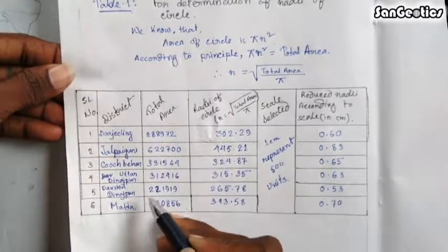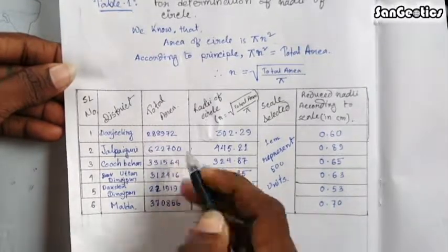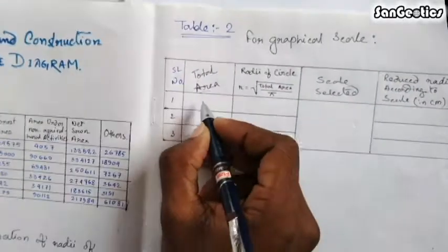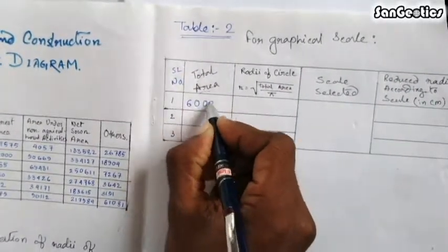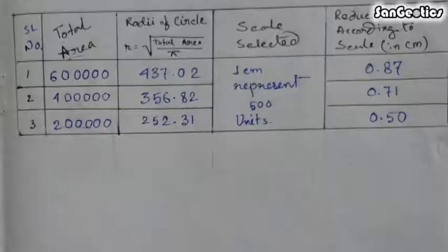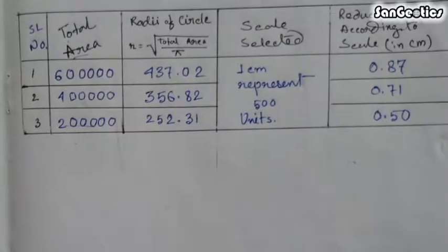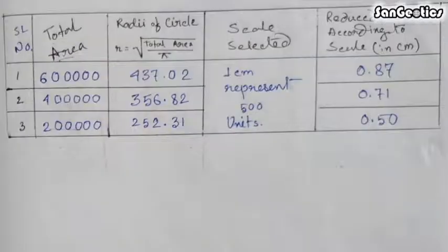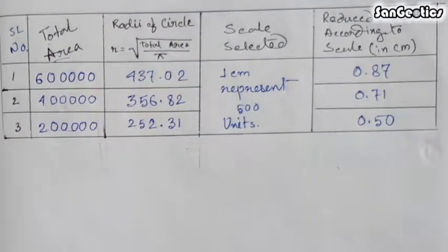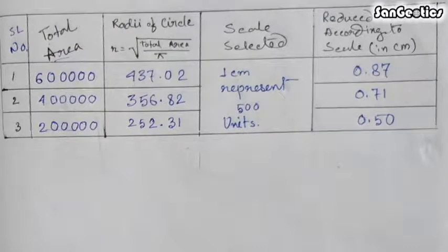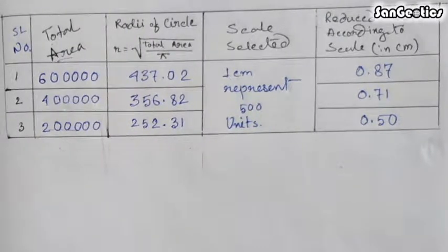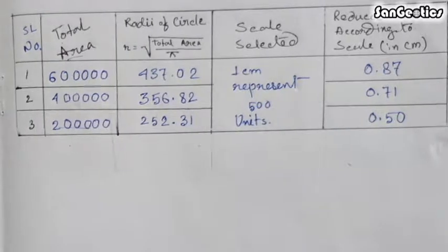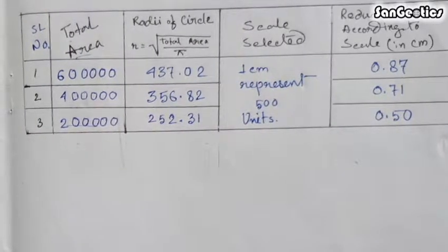The total area for the graphical scale would be selected from the highest total area, which is 622700 from the 6 districts. In the total area column, data are assumed on the basis of round figures as 6 lakh. The lowest graphical scale is selected on the basis of the lowest total area of a district, and the medium total area is selected on the basis of the mean of highest and lowest. Then calculate the remaining rows and columns similarly as Table 1.